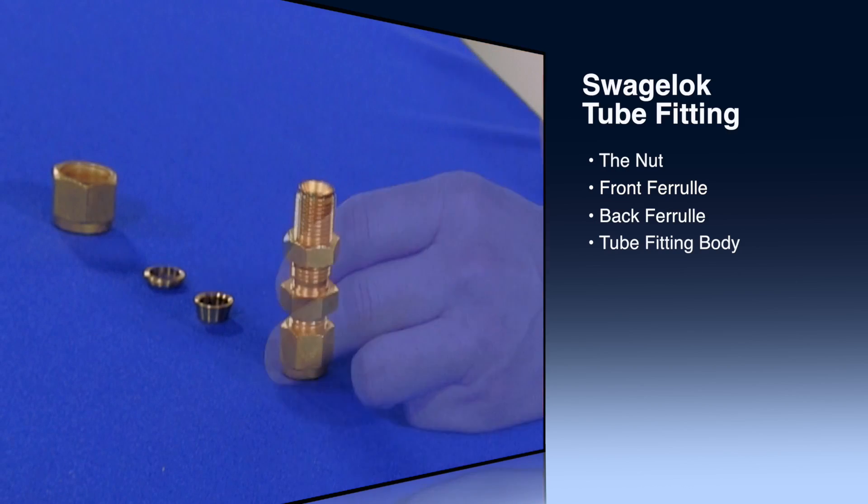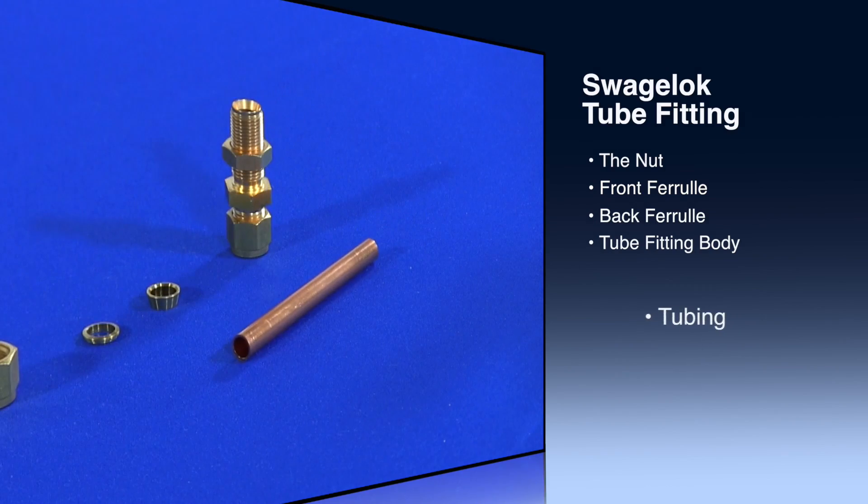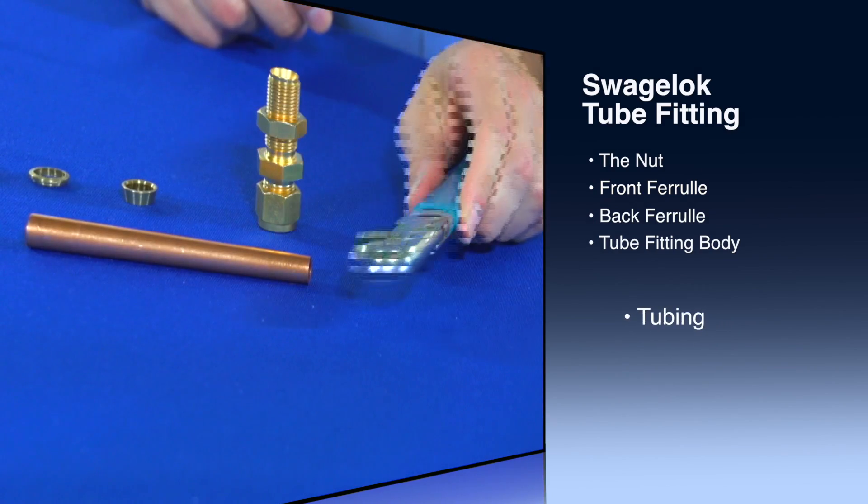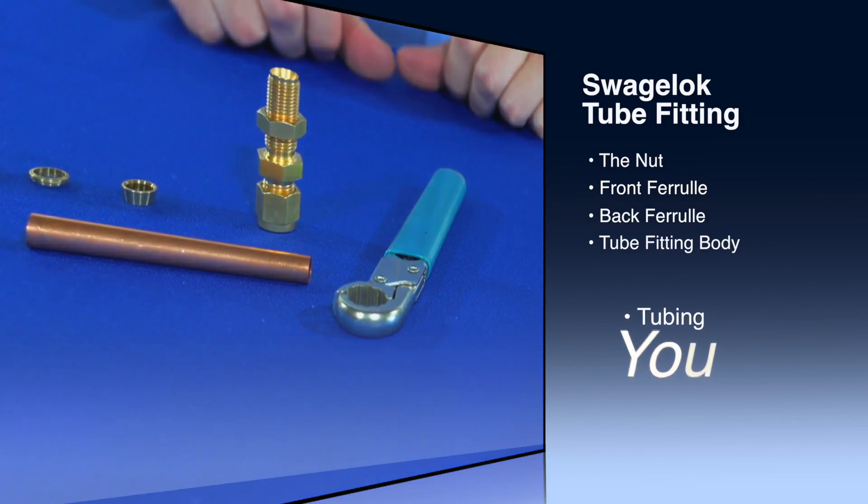But are there really only four components involved in the installation of a Swagelok tube fitting? No, there are actually two more. The tubing specific for the job and you the installer.